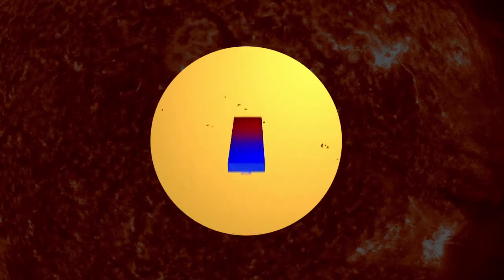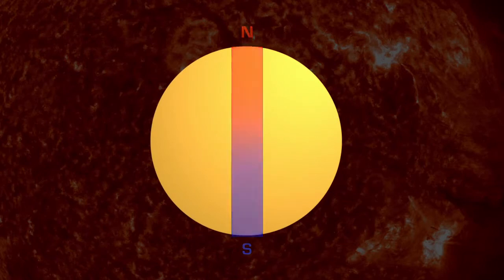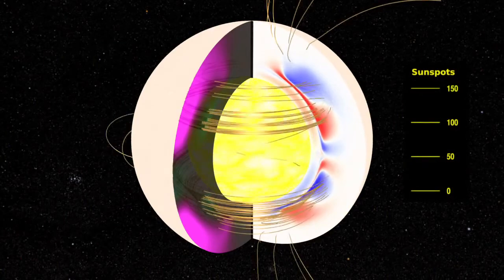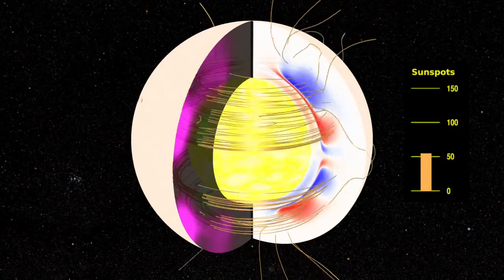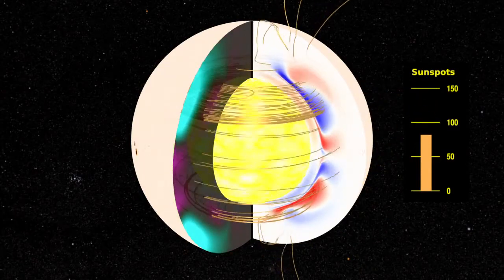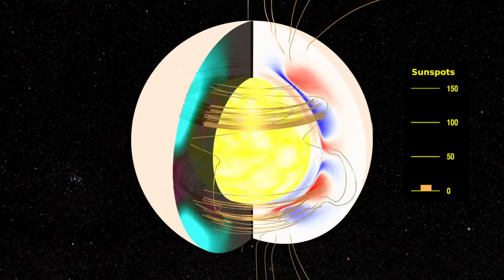So every 22 years, the poles return to the position where they started the cycle. The flip is due to the complex movement of magnetic fields inside the Sun that are constantly stretching, twisting, and crossing as solar material bubbles up from the Sun's core. But the exact pattern of movements is not yet mapped out.